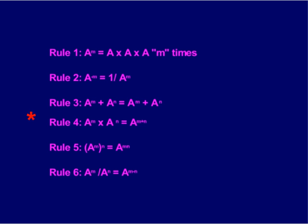The reason for the confusion is rule number four. a to the m times a to the n equals a to the m plus n. If you multiply the same number or variable with different exponents, you add the exponents.